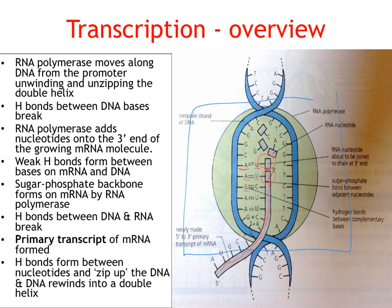The hydrogen bonds between the mRNA and DNA then break, and the messenger RNA molecule moves away from the DNA. The nucleotides in the DNA molecule then pair up again and the DNA molecule zips itself back up, rewinding into a double helix. Meanwhile, the mRNA molecule that has been made moves away from the DNA, and that is called the primary transcript.